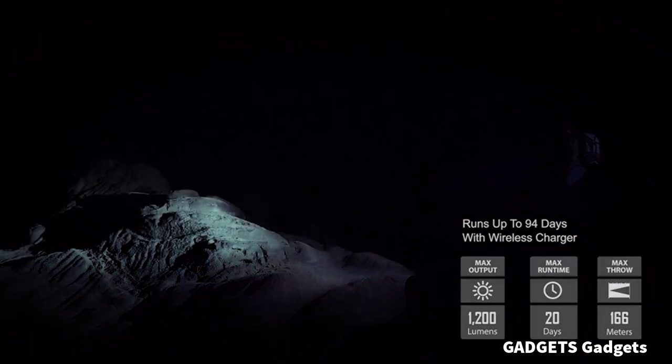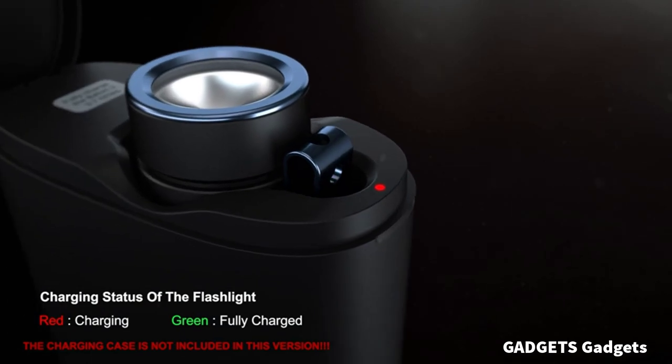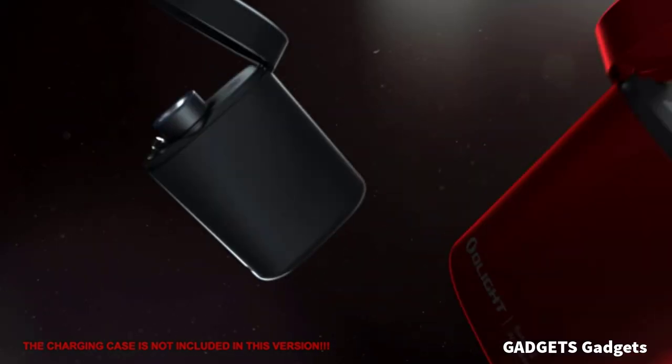The two-way pocket clip can be attached to belts, pockets, and backpacks for easy carrying, or attached to the hat brim to use the Batten 3 as a convenient headlight.